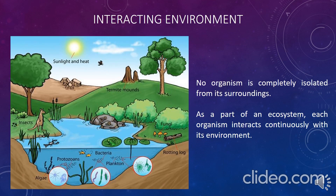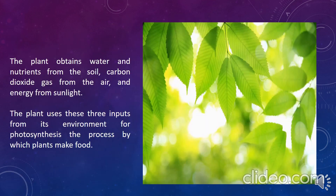The fifth unifying theme in the study of life is the interaction of organisms with their environment. There is no organism that is completely isolated or disconnected from its surroundings, as each organism continues to interact with its environment. For example, a plant obtains water and nutrients from the soil, carbon dioxide from the air, and energy from sunlight. The plant uses these three inputs from its environment to perform photosynthesis.